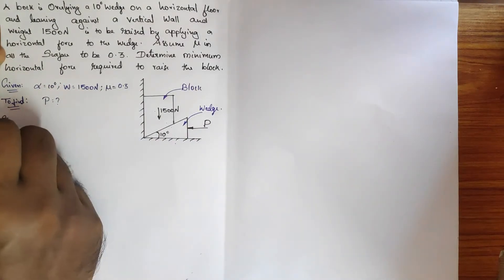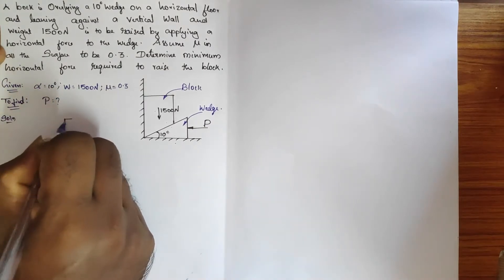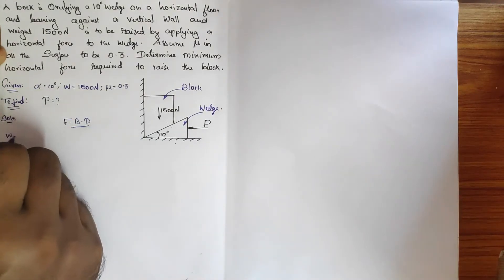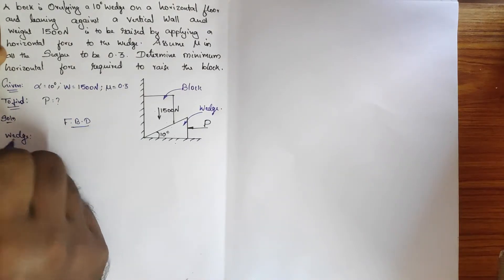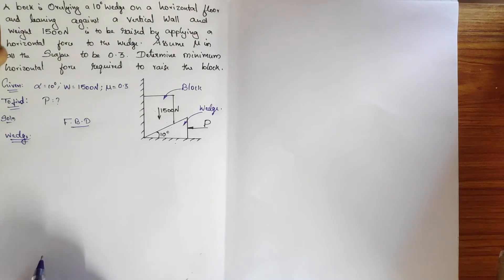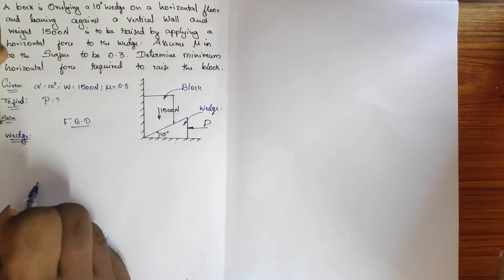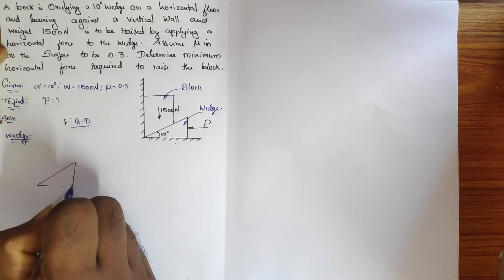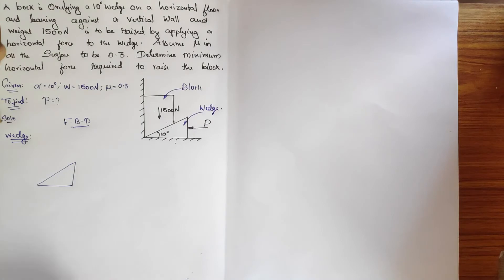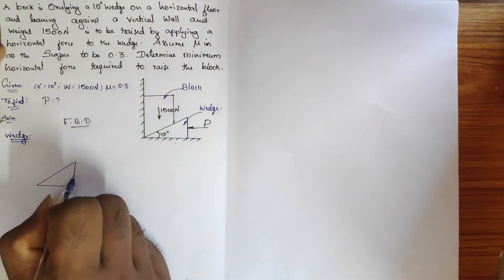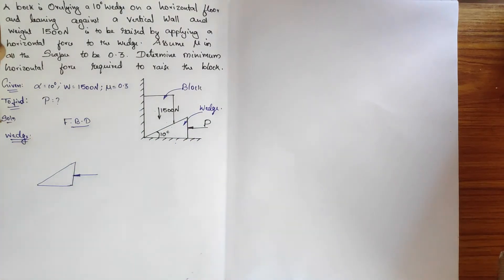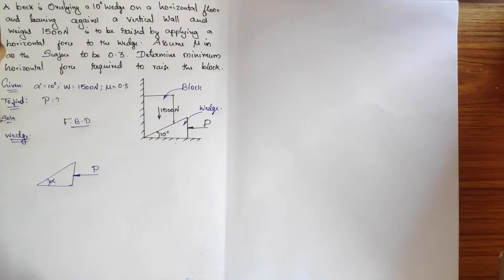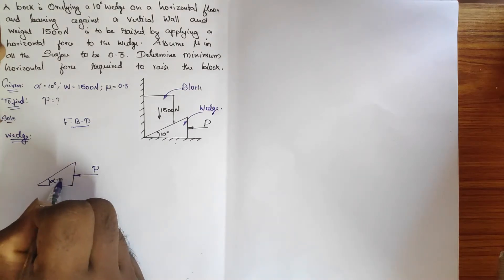Let's get into the solution. First we shall draw the free body diagram. I will start with the wedge and then move to the free body diagram of the block. I just draw the free-hand sketch of the wedge. Here in the wedge, the force P is applied, and this angle is alpha which is equal to 10 degrees.